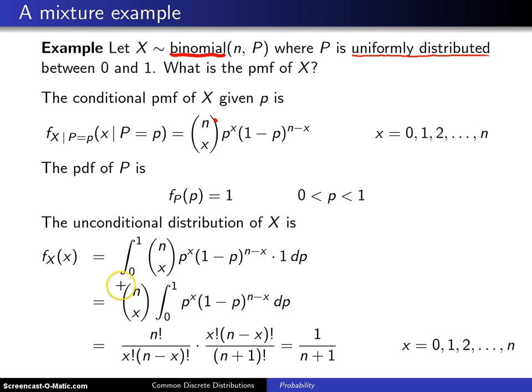Now this n choose x can be written out as n factorial divided by x factorial n minus x factorial, so there that is.